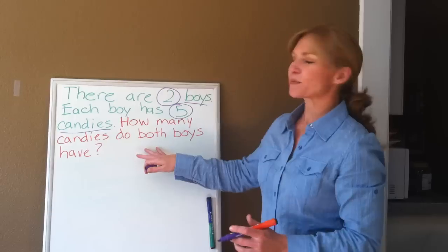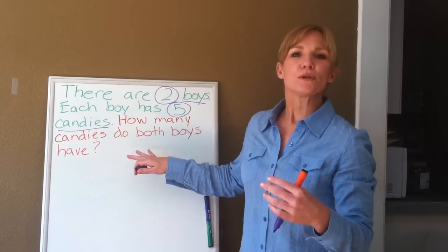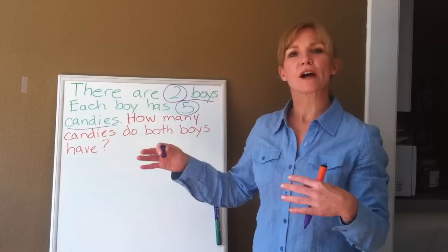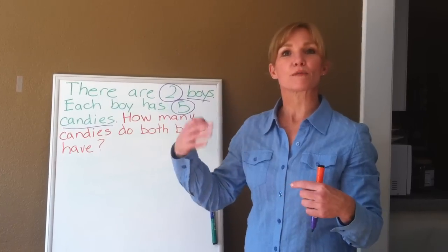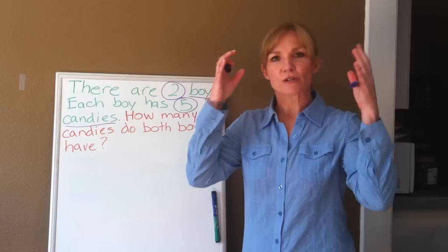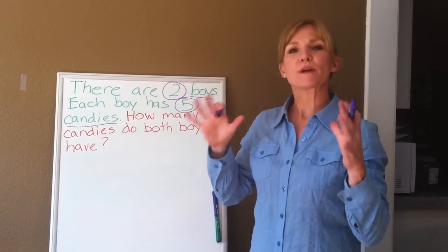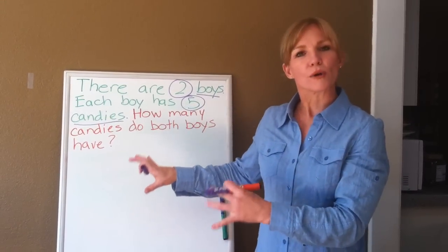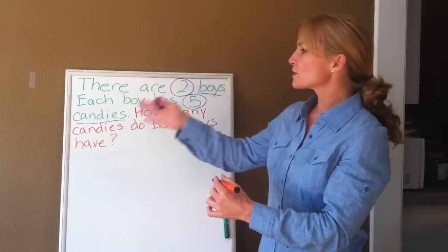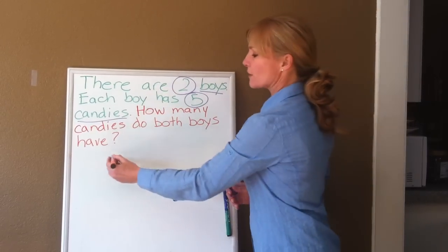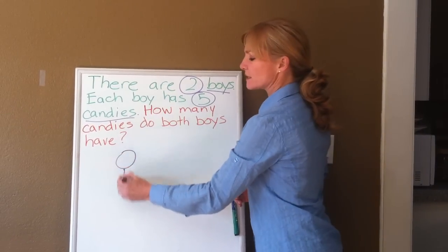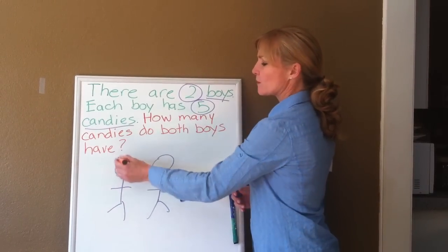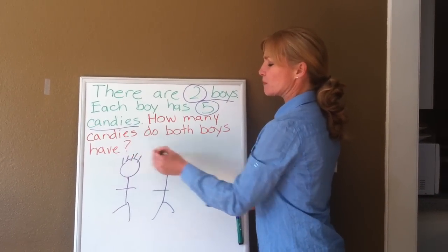So obviously looking at this problem, you and I know that it's a multiplication problem, but for a child — especially a child who's more of a right-brained learner and sees pictures in their mind — the best way for them to understand it is to draw what the question is asking. So first thing I would suggest is have them draw the two boys. Here's boy number one, here's boy number two, and we'll give them spiky purple hair.